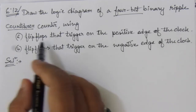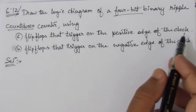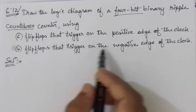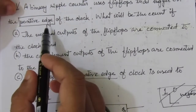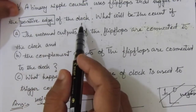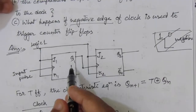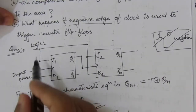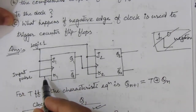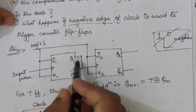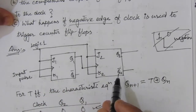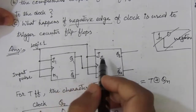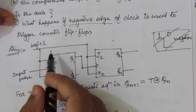In the first case, the flip-flops trigger on the positive edge of the clock. In the second case, we trigger the flip-flops on the negative edge of the clock. In our previous problem, we were asked to design a positive edge-triggered ripple counter. There we used a 2-bit ripple counter with JK flip-flops with shorted inputs to make it a T flip-flop, and the normal output was connected to the clock of the second stage.